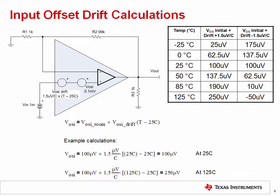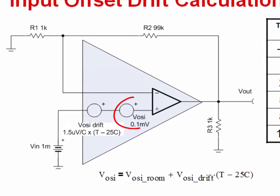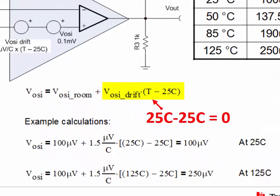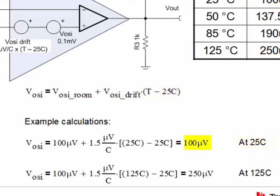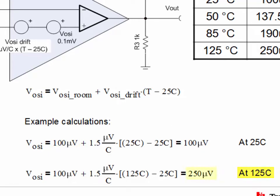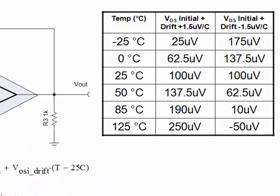Offset drift calculations can be done in a similar manner. We have two sources: one for the initial offset and one for the offset drift. The offset drift source will be 0 at 25 degrees C. As the temperature deviates from 25 degrees C, the temperature difference is multiplied by the offset drift to generate additional offset voltage. For example, at 25 degrees C we have 100 microvolts of offset. At 125 degrees C, we have a total of 250 microvolts — 100 microvolts from the initial offset and 150 microvolts from the drift term. The table on the right illustrates how the offset changes over temperature, and both positive and negative slope cases are shown.